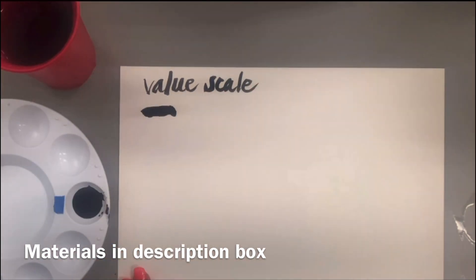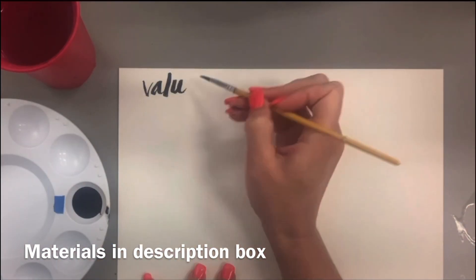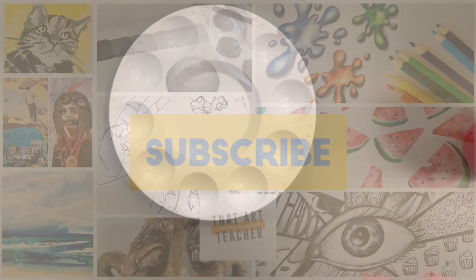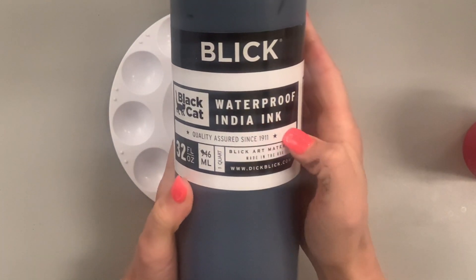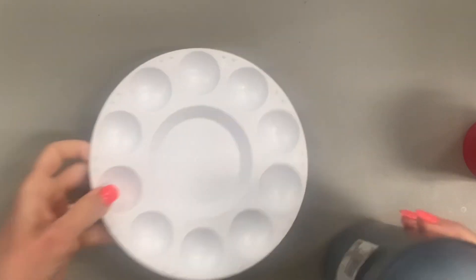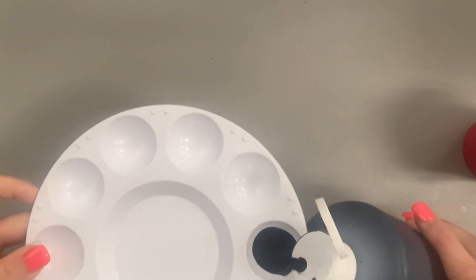If you love learning about art, hit that subscribe button so you never miss a weekly tutorial. Today I'll be using Blick Black Cat Waterproof India Ink. My school uses purchase orders through Blick Art Materials, so most of my supplies come through there. I'll put some of my favorite other inks in the description box as well.